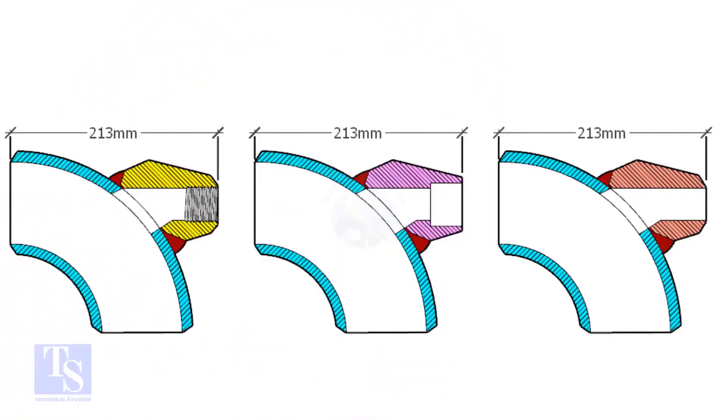Mainly, there are three types of elbowlets: threaded elbowlet, socket-weld elbowlet, and the butt-weld type.